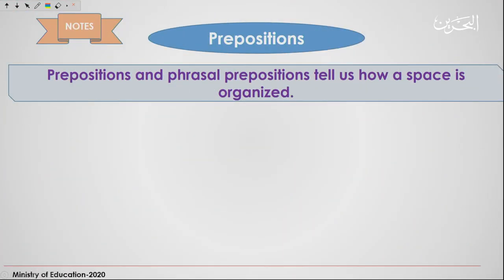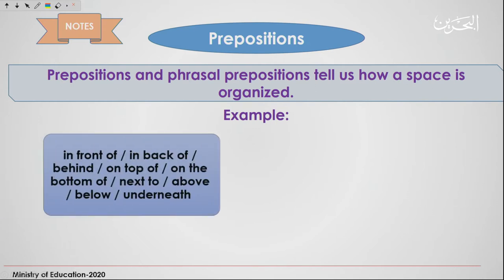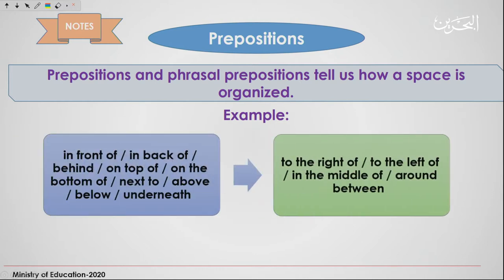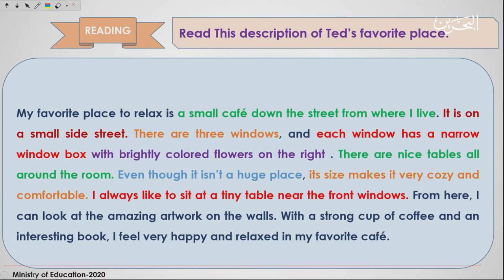Prepositions and phrasal prepositions tell us how a space is organized. Usually when you talk about a certain place and describe it, you give directions or tell the person where they can find it. We use directions like: in front of, in back of, behind, on top of, on the bottom of, next to, above, below, underneath, to the right of, to the left of, in the middle of, around, between, and so on. These are just examples.